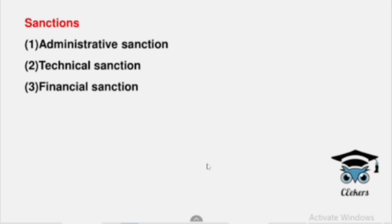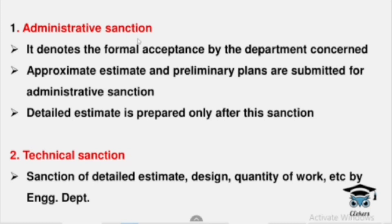Then we will execute the work. We will need to attend to the department for sanctions. We mainly give out three types of sanctions: Administrative Sanctions, Technical Sanctions, and Financial Sanctions. For Administrative Sanctions, we submit an Approximate Estimate along with Preliminary Plans, and they accept it. That formal acceptance by the Administrative Department is called Administrative Sanctions.